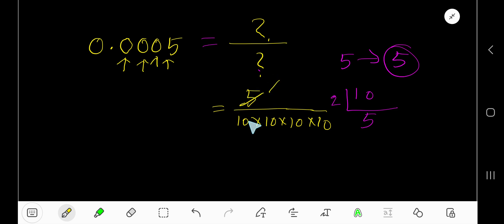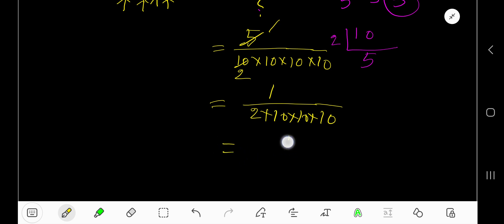So you are getting 1 over 2 times 10 times 10 times 10. Now multiply - if you multiply these three tens together, you are getting 2 times 1000, that is 1 with three zeros.